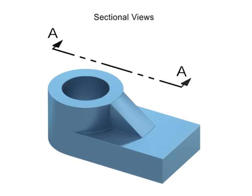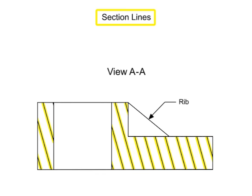Once an object is sectioned, pattern lines called section lines are added to indicate the remaining material. Only the material that has been cut or sectioned is given patterned section lines.